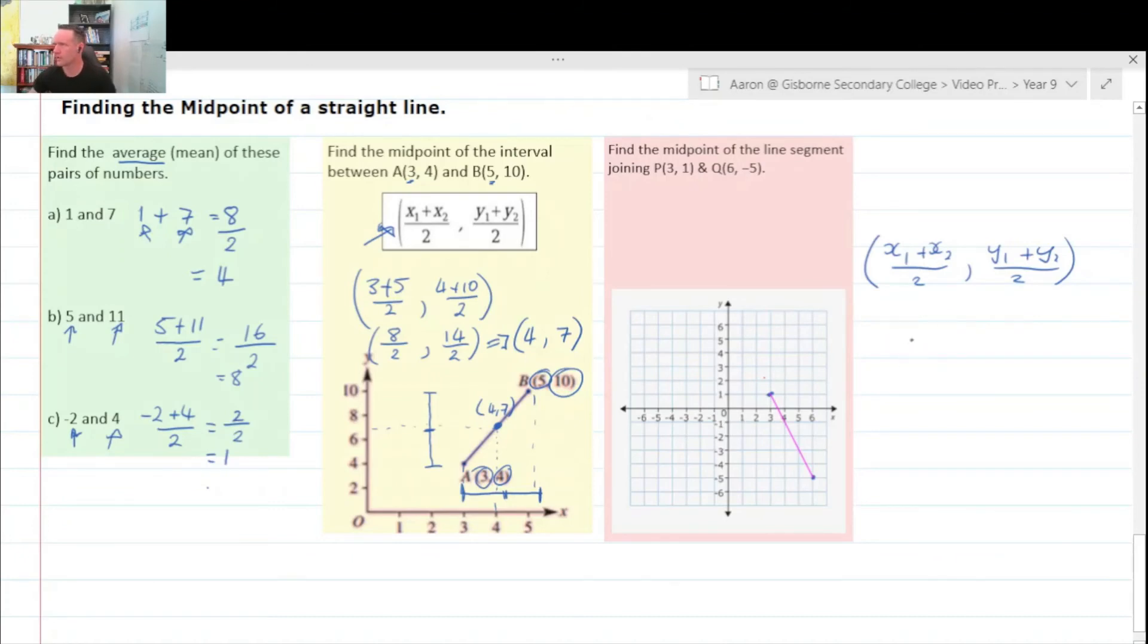Because this is commutative, so I can come back and forth. So I've got 3 plus 6 over 2, and I've got 1 plus negative 5. So I have two x points or two y points, both divided by 2.